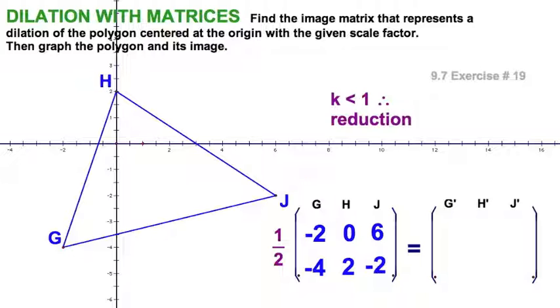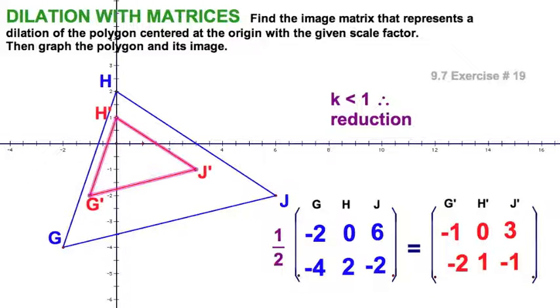Pretty straightforward. So, half of negative two, negative one, half of negative four, negative two, half of zero, okay, half of two, and half of six, half of negative two. Pretty easy. Now, let's just plot all those points, and as you can see, this figure is a reduction.